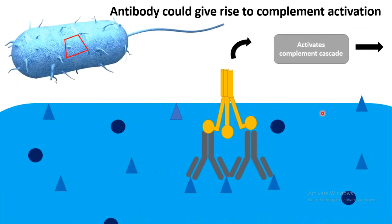The first function of antibodies is complement activation. Antibodies bind onto surface antigens — let's say of a bacterium — and they can bring in complement proteins such as C1q, thereby activating the whole complement cascade and opsonizing and killing the bacterium.